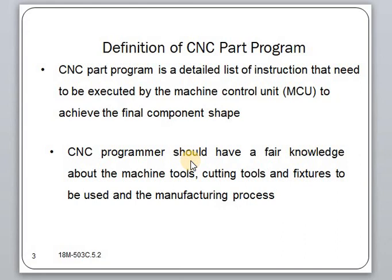The CNC part program includes, among other things, commands that move the tool to various locations relative to the workpiece. To be able to specify the required tool positions, some reference point is needed. This reference point is used within the program as the basis for defining the tool location and other geometry entities, and is referred to as the origin.